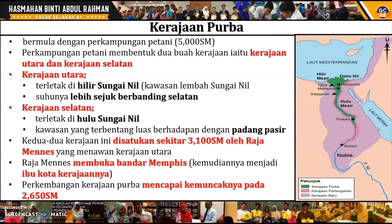Kita lihat tiga tahap kerajaan dengan lebih lanjut. Tahap pertama ialah Kerajaan Purba, yang bermula dengan perkampungan petani pada tahun 5000 sebelum Masihi. Perkampungan petani ini kemudiannya membentuk dua buah kerajaan: satu kerajaan di bahagian utara dan satu lagi di selatan. Kerajaan utara terletak di hilir Sungai Nil, iaitu di kawasan lembah Sungai Nil, dengan suhu yang lebih sejuk berbanding selatan.